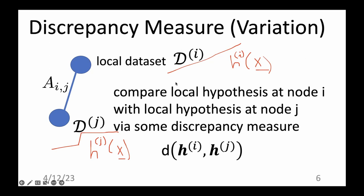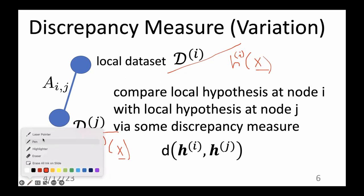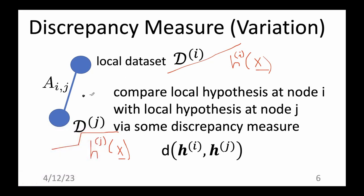Very good — compare the predictions on a common test set. We must find a common ground to compare those two hypothesis maps. One implementation is a common test set shared by both nodes, consisting of feature vectors. We don't need labels — this can be unlabeled data. We then compare the predictions of the two hypothesis maps applied to the same data points. This is what you will do in the coding assignment: a discrepancy measure based on squared differences of predictions on a test set.